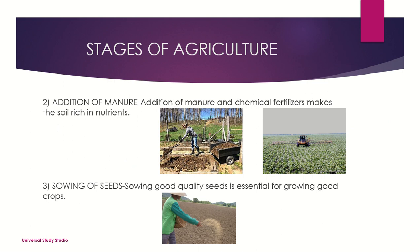Number two: addition of manure. Adding manure and chemical fertilizers makes the soil rich in nutrients. This basically means it improves the soil — it makes it better compared to what it was before.